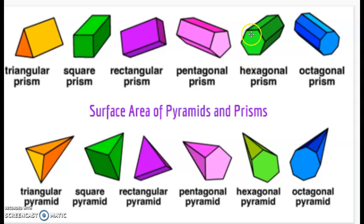Then we have a hexagonal prism and an octagonal prism. So the base in each of these, the base names the shape. So this becomes an octagonal prism because the base is an octagon.